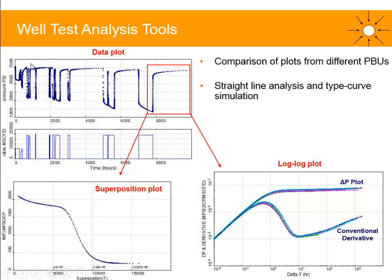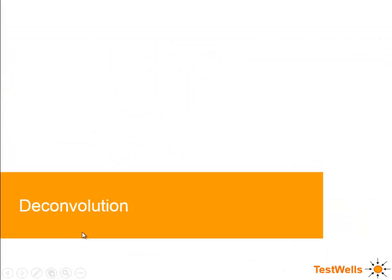Once you are happy with the PBU test, then we can have a look at the production periods. This is going to give you some information about the skin and the evolution of the skin over time and the turbulence factor as well. So deconvolution is the fourth tool in the well testing toolkit, and it's a very powerful one.